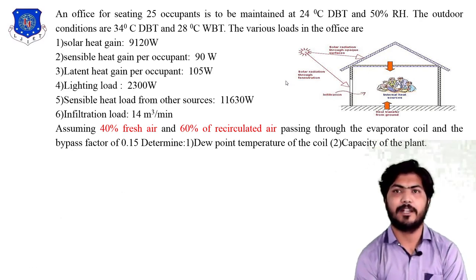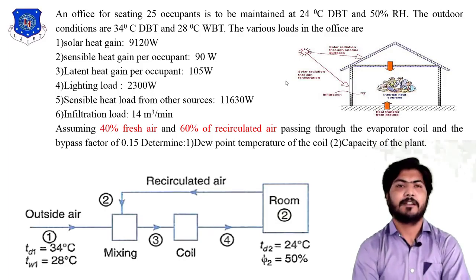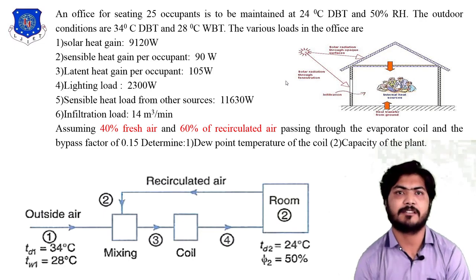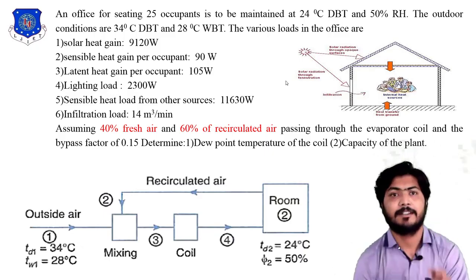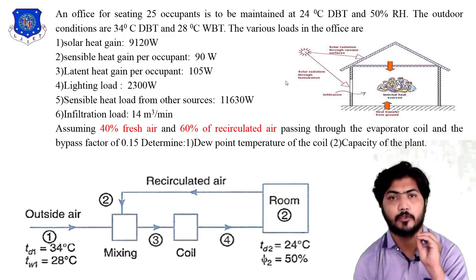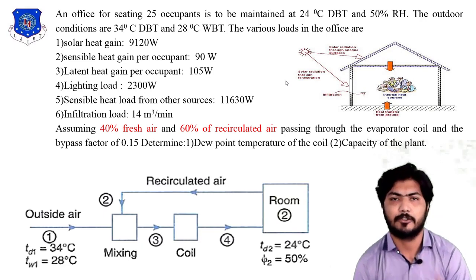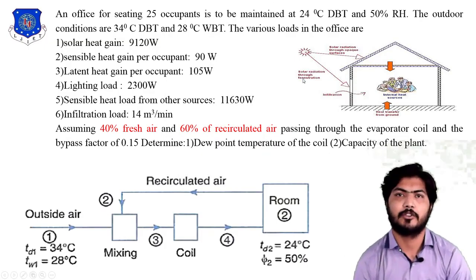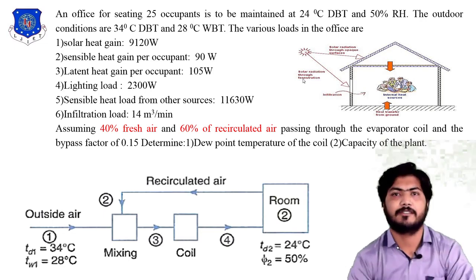We are to determine the dew point temperature of the coil and the capacity of the AC plant. This is explained using a diagram: outside air at condition point 1 comes into the mixing chamber where 60% recirculated air and 40% fresh air are mixed. This mixing air passes through the cooling coil, since the required temperature is lower than the outside air. After the cooling coil, cold air is supplied to the room, heat is absorbed from the room, and the air is again recirculated to the mixing chamber — this is the whole cycle.